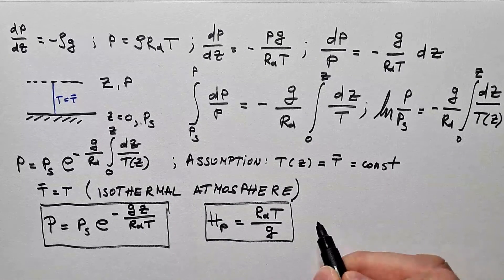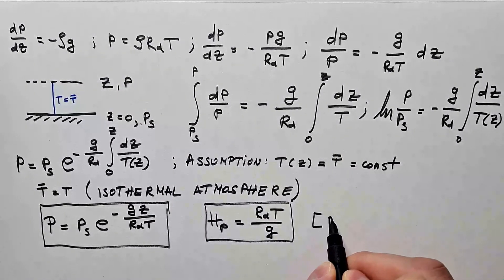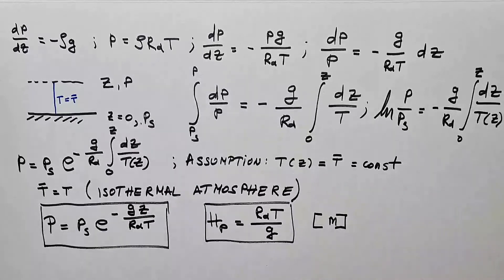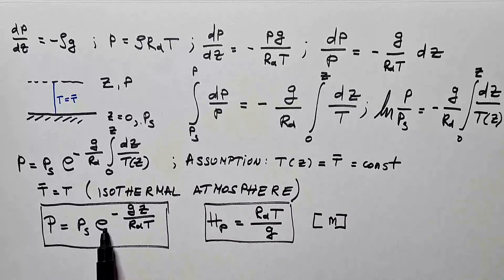I hope you can see that dimensions of this thing have to be meters in order to cancel out with z, so we have exponential that is non-dimensional.